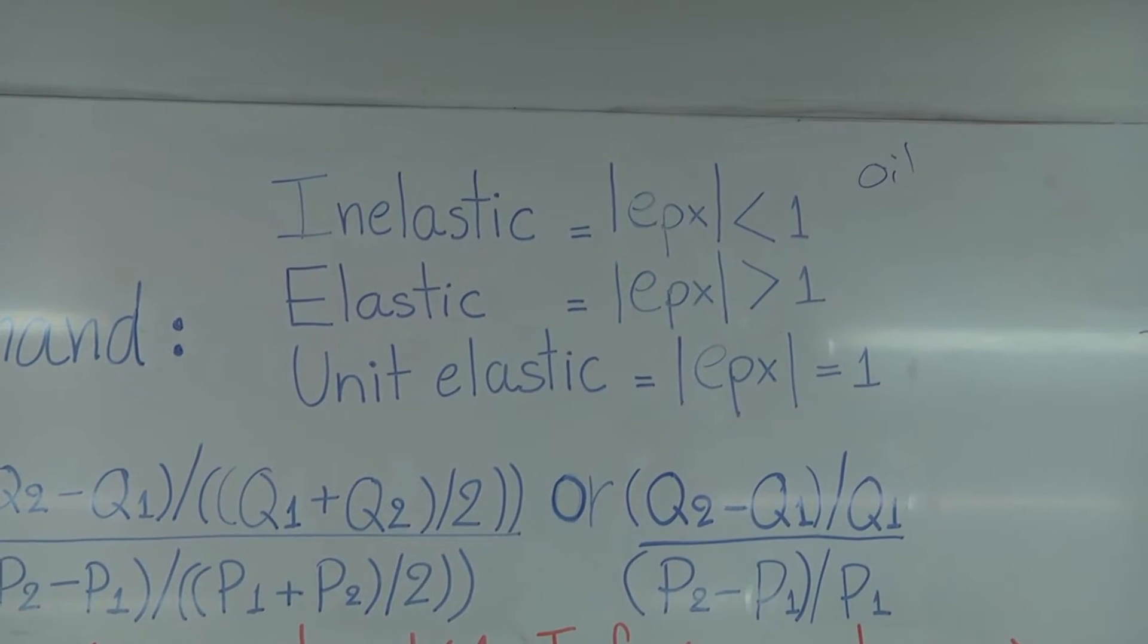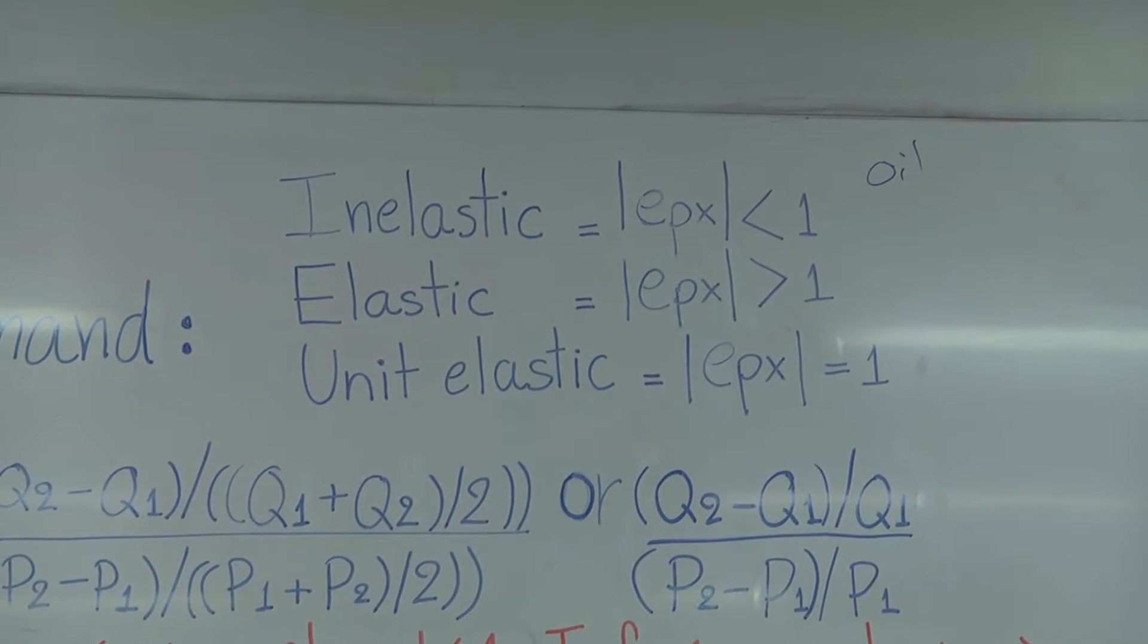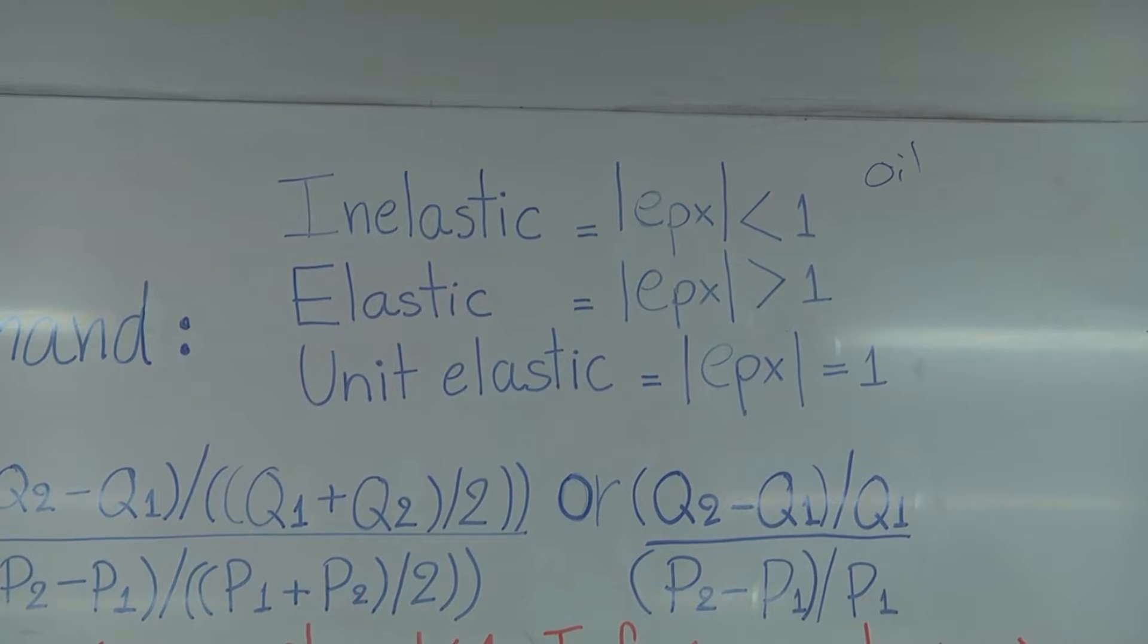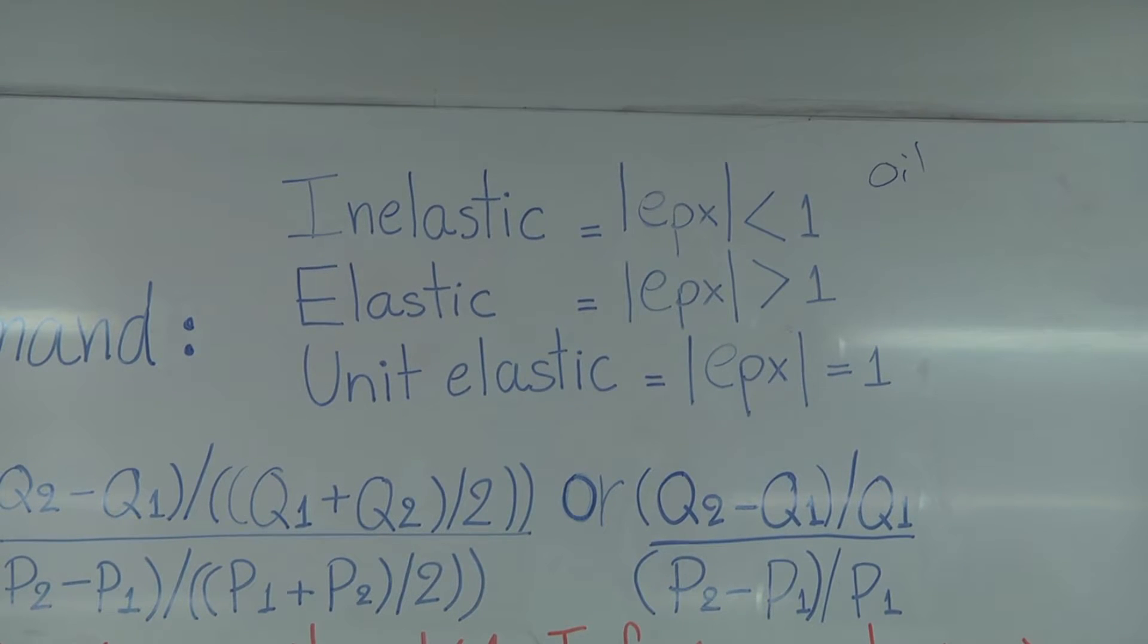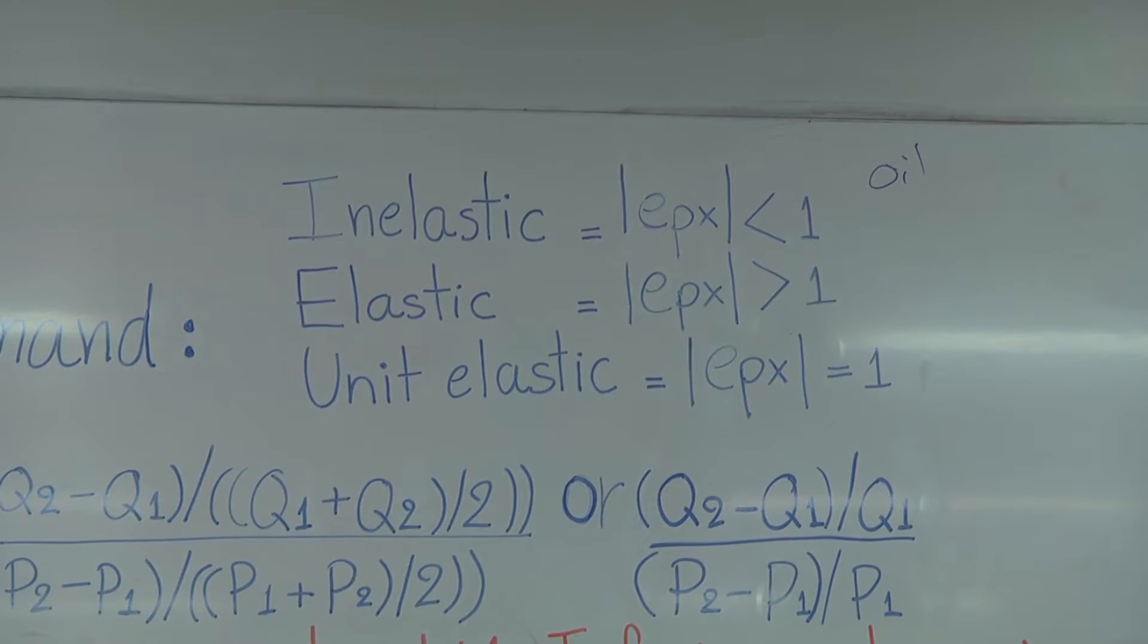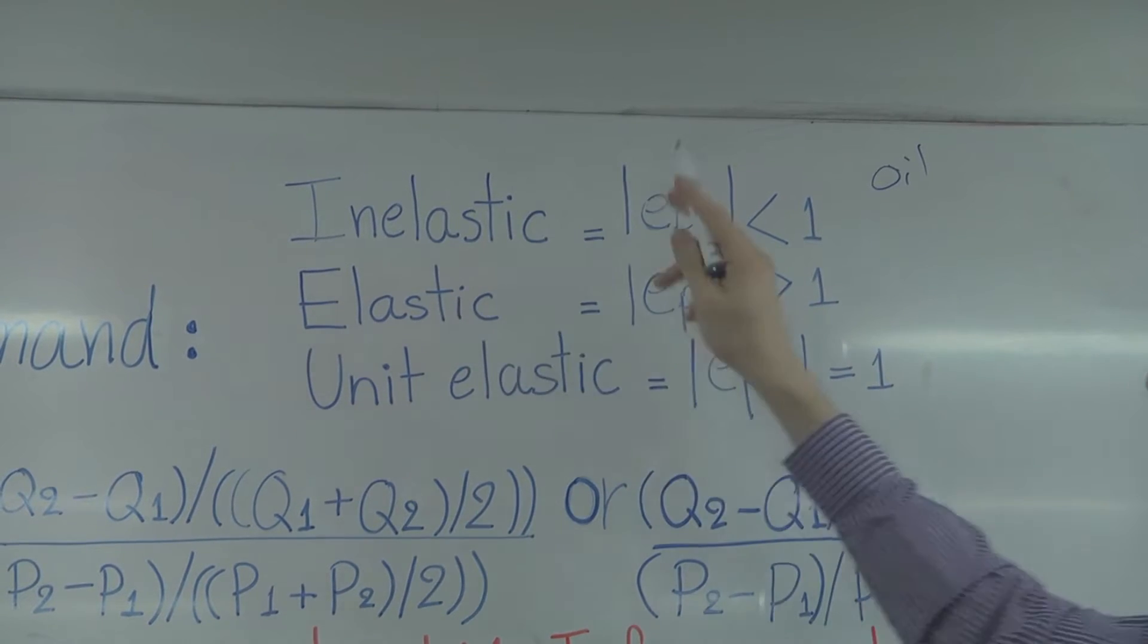Some examples of inelastic items could be like oil. So the price of oil could go up, but the demand would change very little. Also, maybe something like cigarettes or alcohol. If the prices go up, people will still consume roughly the same amount. So inelastic is not very sensitive.